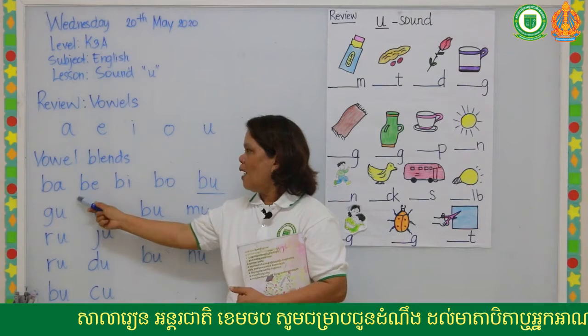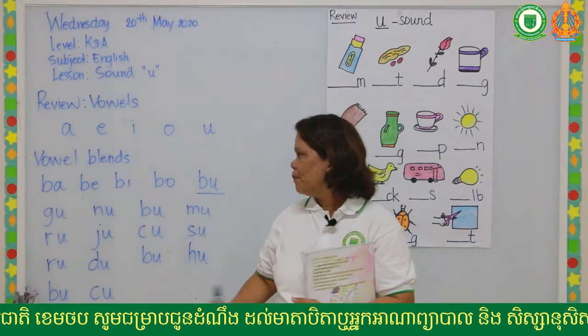So these are the vowel blends: ba, de, di, bo, ba — until ja, ja, ja, ja, ja, ja, ja.